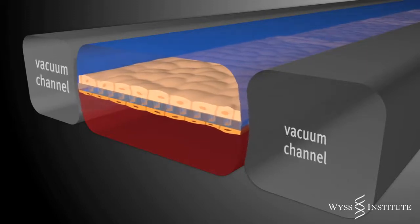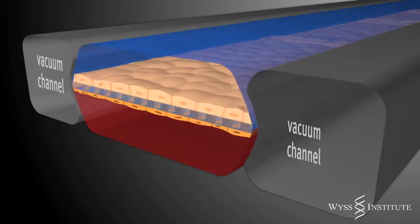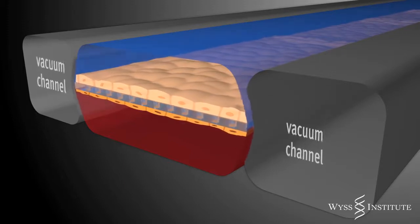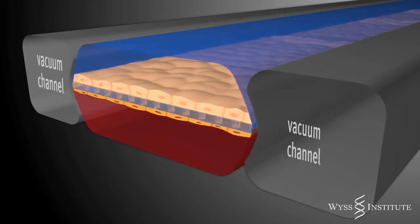Application of cyclic suction in side channels makes the entire flexible sheet and cells stretch and relax rhythmically, just like our lung cells do when we breathe.